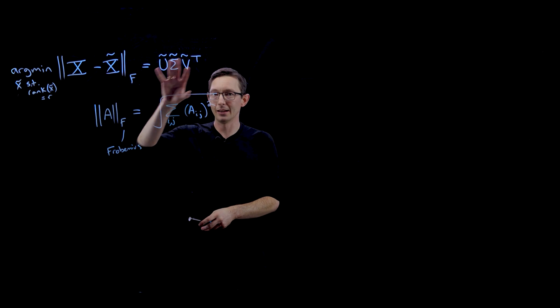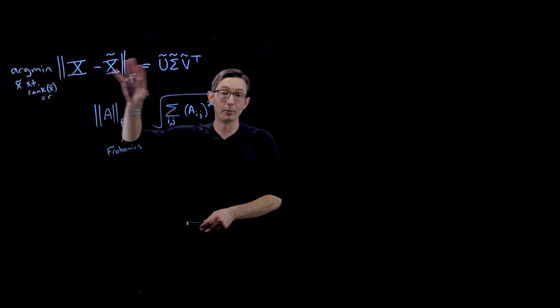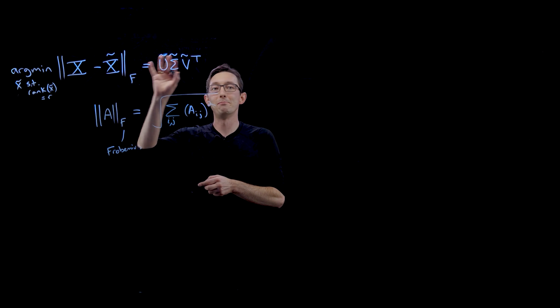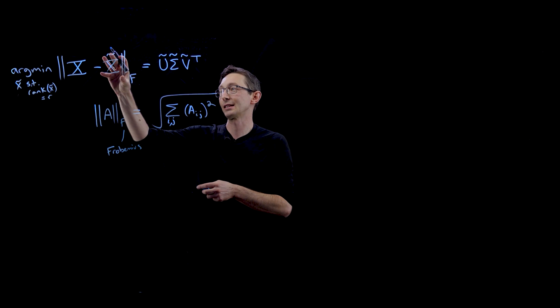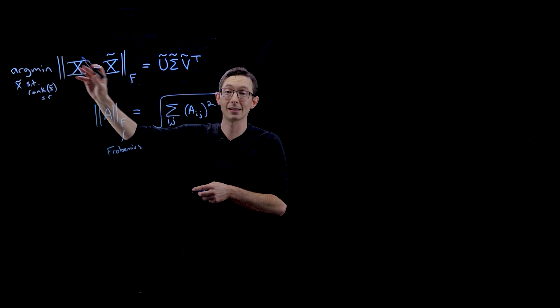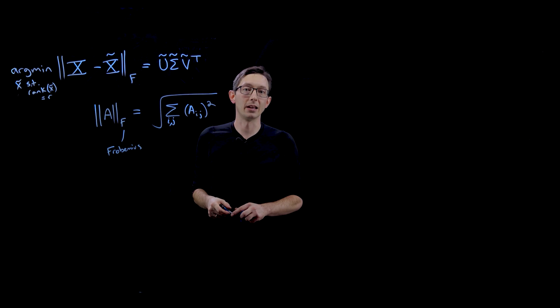And so that's the sense in which this is the minimum norm solution. The SVD gives you the best rank R approximation X tilde of a matrix X in the Frobenius norm. Thank you.